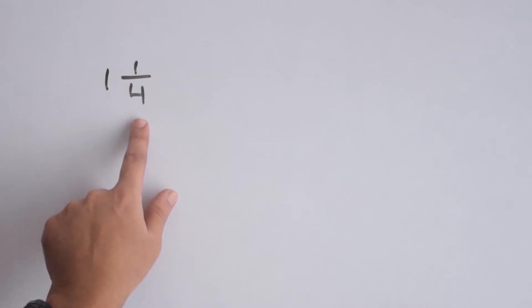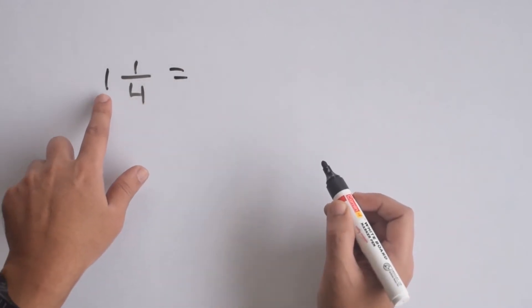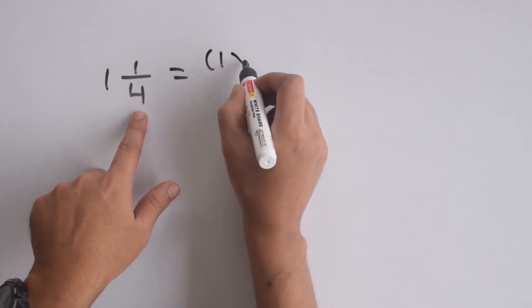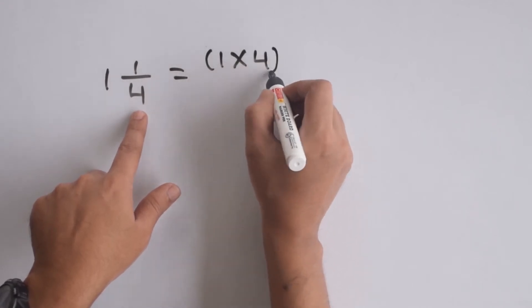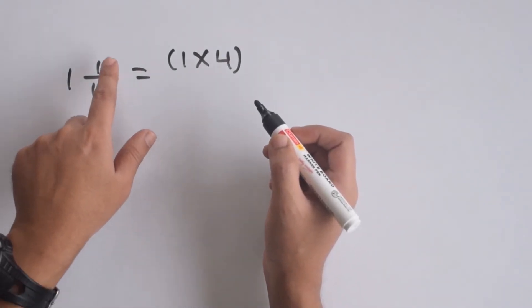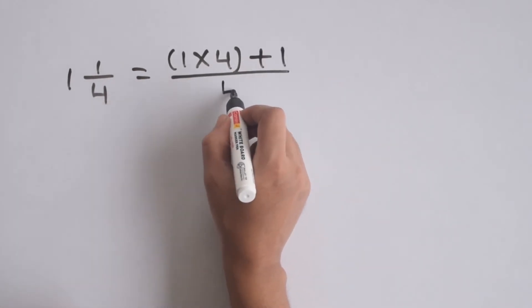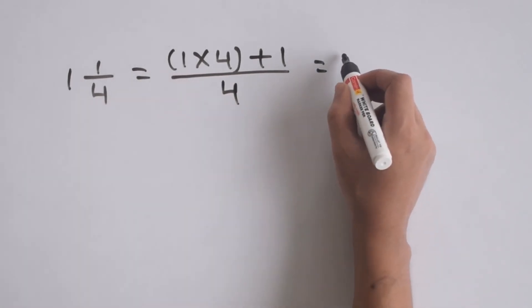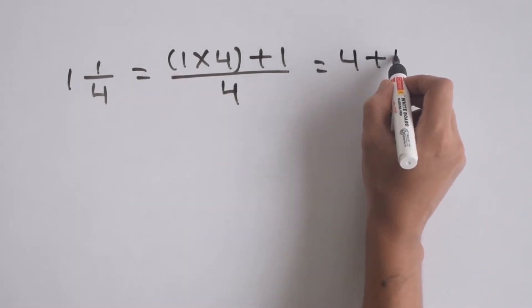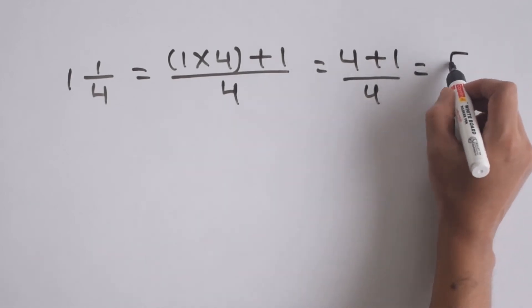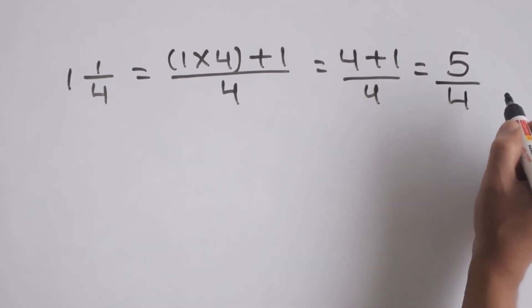Now, how do we convert this? We know the procedure. We multiply the whole number with the denominator—that is, 1 × 4—and add the numerator to it, which is +1, all over the denominator 4. So (1 × 4) + 1, divided by 4, gives us 5/4.